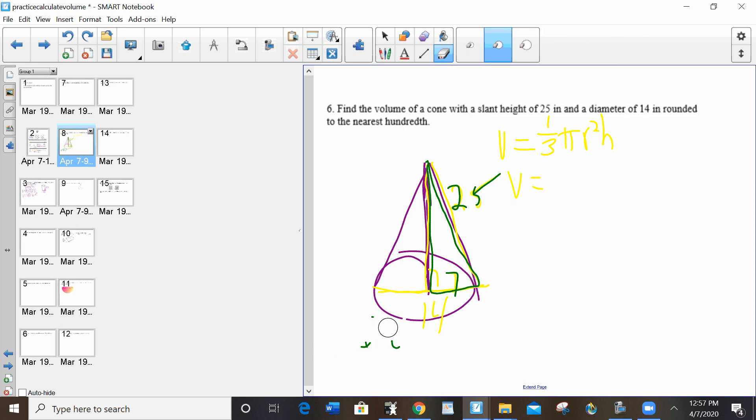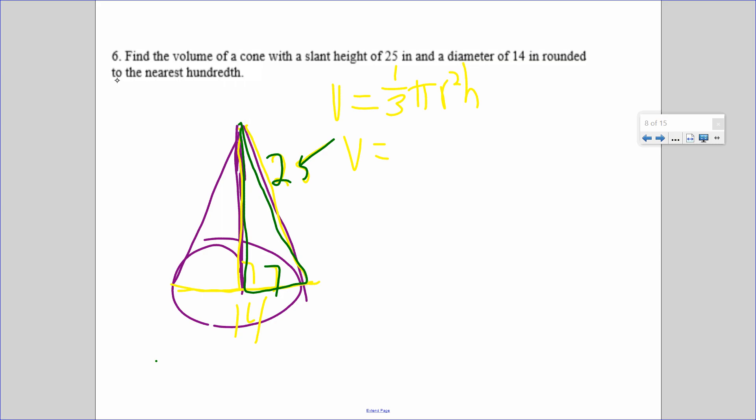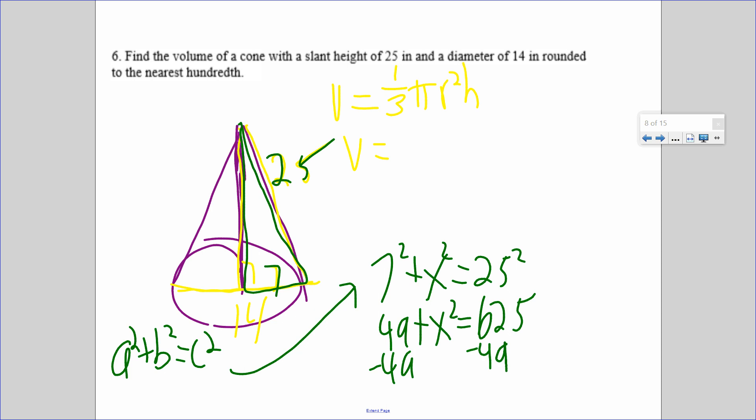So if they give you slant height, you're going to probably have to use Pythagorean theorem in order to find the actual height. Because in the formula, we need the height. So 7 squared plus x squared equals 25 squared. 49 plus x squared equals 625. x squared equals 576. Square root x equals 24.